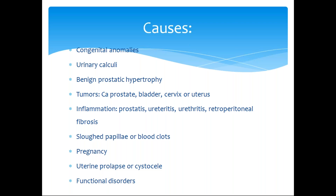You can remember these causes by the site of the obstruction — either at the prostate, the bladder, the ureter, or the renal pelvis. Or completely extra-renal, like pregnancy or retroperitoneal fibrosis.